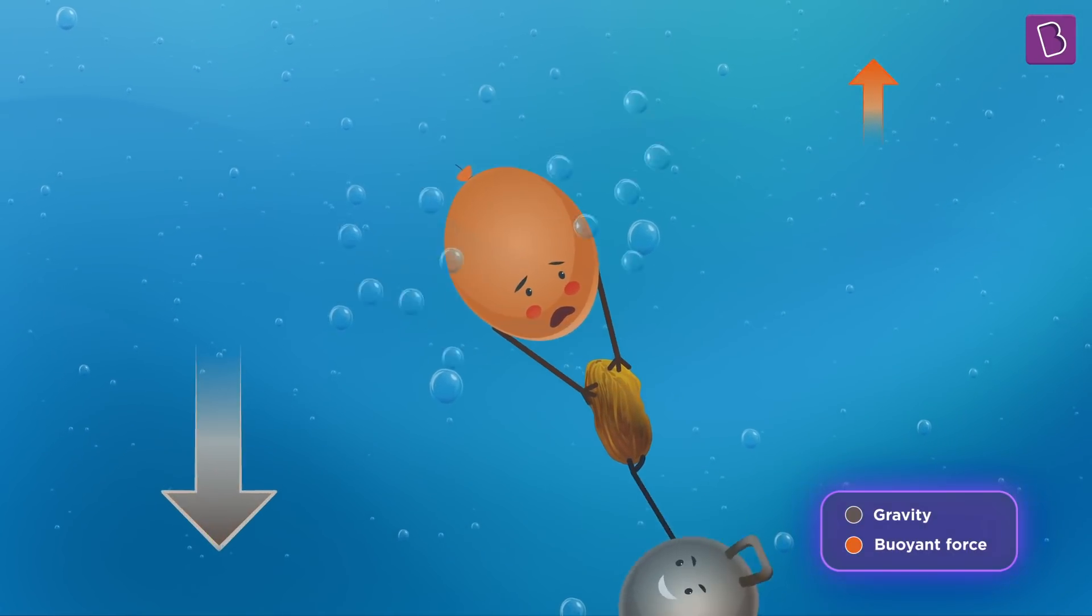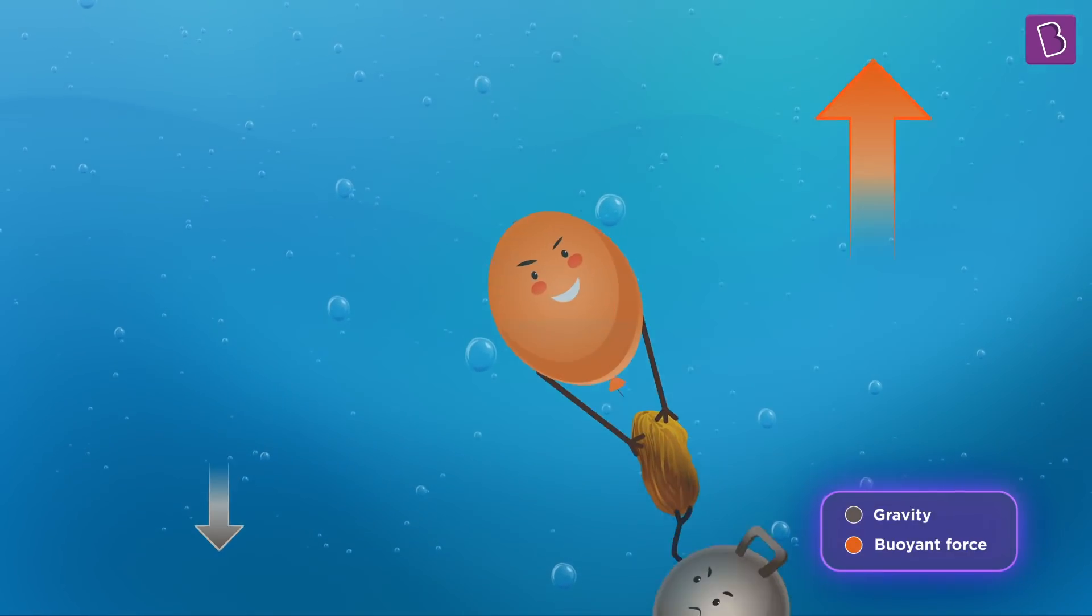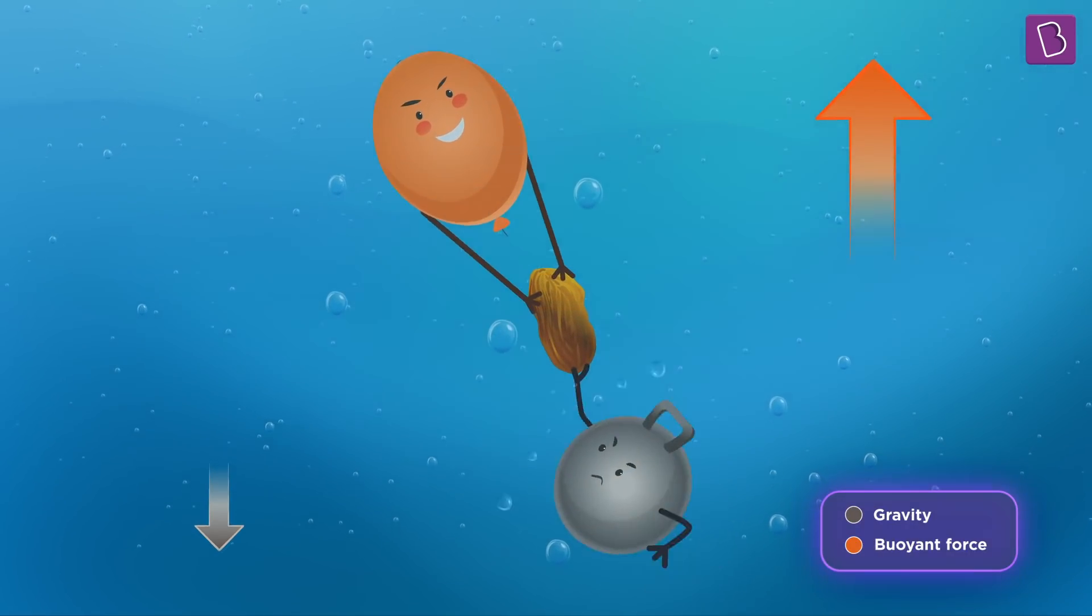When gravity wins, the raisin sinks. On the other hand, when the buoyant force wins, the raisin rises upwards.